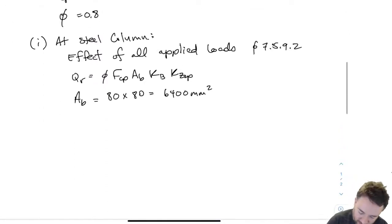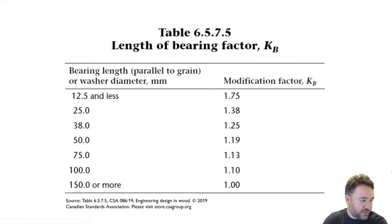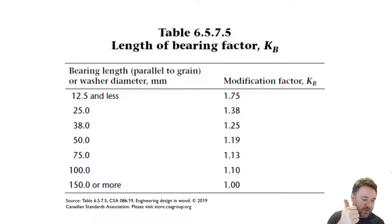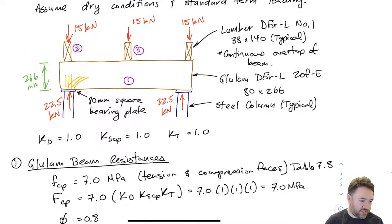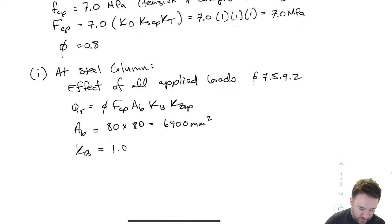For KB, the length of bearing factor: the bearing length is 80 millimeters, which would potentially give a KB greater than one from the table. However, this table only applies if I'm not within 75 millimeters of the end of a member, and not in an area of high bending stress. Here, the joist is basically right at the end of the member — within 75 millimeters — so therefore KB must be 1.0.